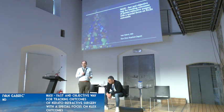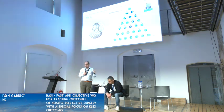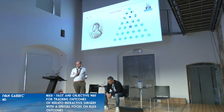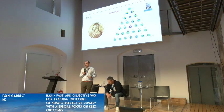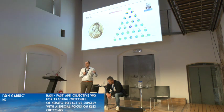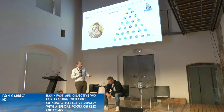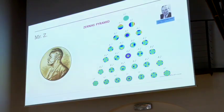But let's go into why we need it. This is Mr. Zernike. He got the Nobel Prize in 1953 for describing the optical aberrations — but that was not his only Nobel Prize. He got one for inventing very special microscopy techniques like confocal microscopy and others.